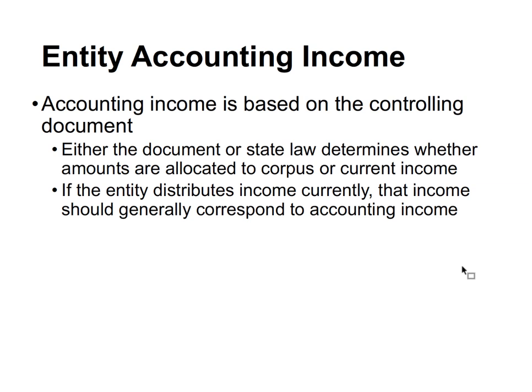Now let's talk about accounting income. Accounting income is based on the controlling document — the estate or trust controlling documents. Either the document or state law determines whether amounts are allocated to corpus or current income, which is very important.